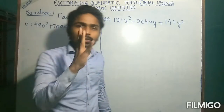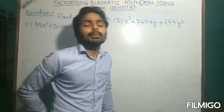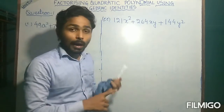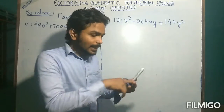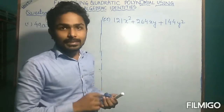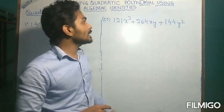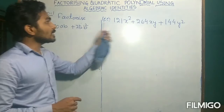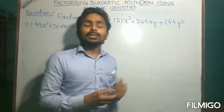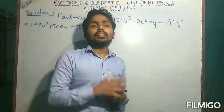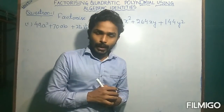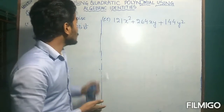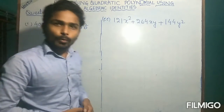Since we have studied only four types of algebraic identities — identity 1, 2, 3, and 4 — these four basic algebraic identities are used here in order to factorize quadratic polynomials into two linear polynomials. So let's start with question number 1.